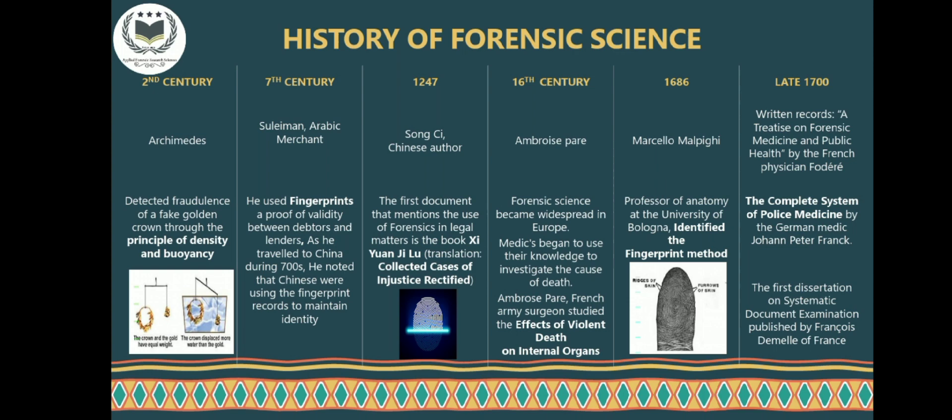Afterwards, fingerprints were used as proof of validity between debtors and lenders. In the year 1247, Chinese author Song Xi mentioned the use of forensics in legal matters in a book titled Xi Yuan Ji Lu.